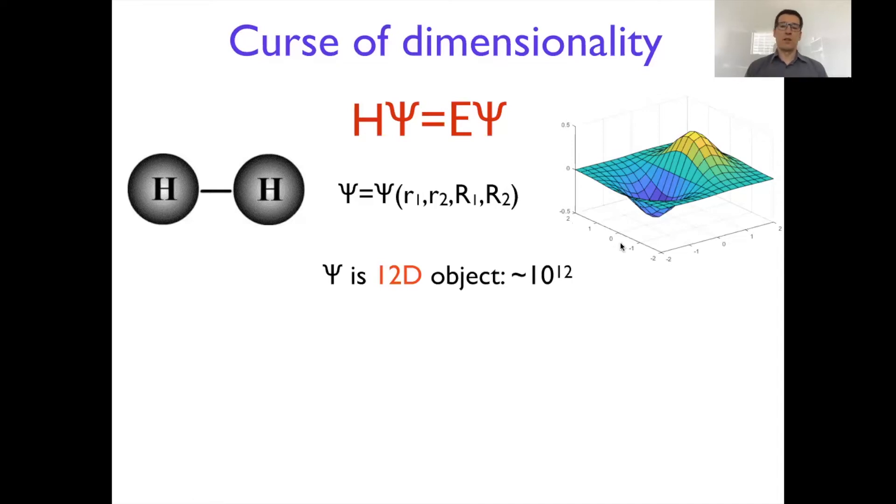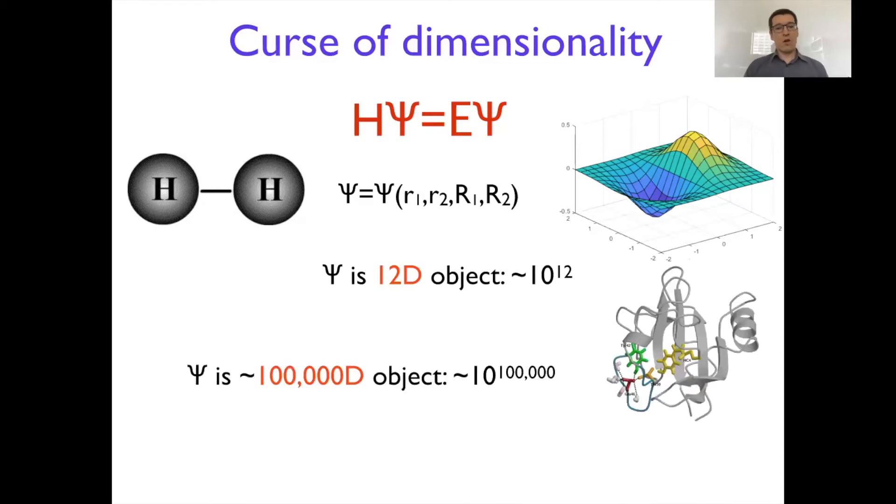Where if you put 10 points per dimension, you get easily 100 points for the wave function. Of course, the hydrogen molecule is not the most interesting object. And if you want to go to, say, proteins and study their properties,